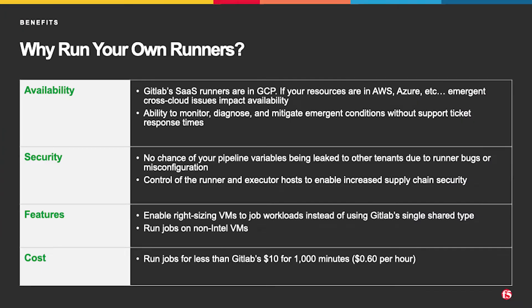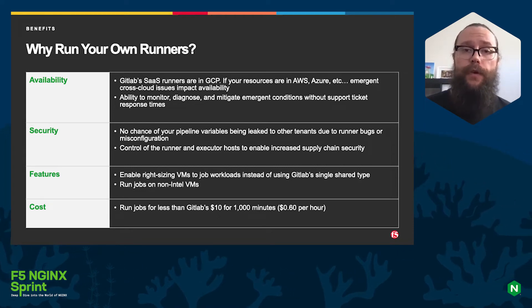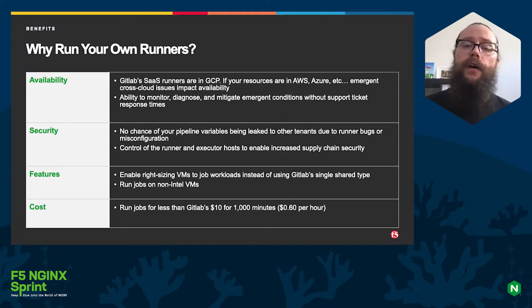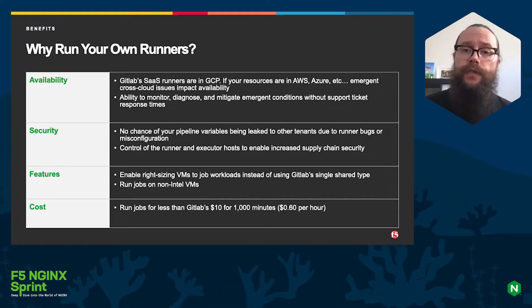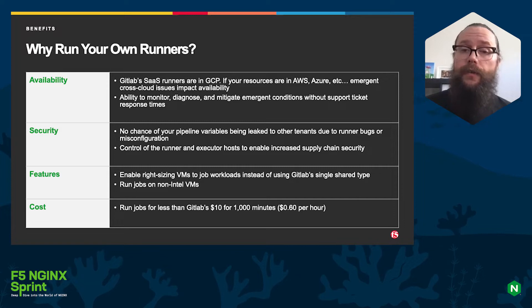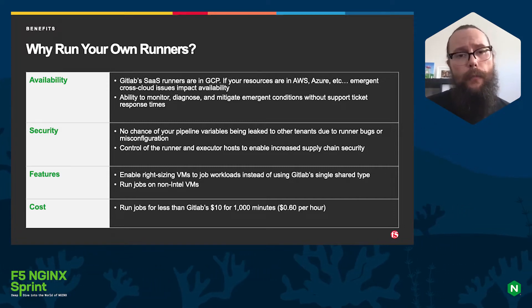Why would you run your own runners? If you're using the open source on-prem version, you're going to have to. But even if you're using the SaaS version, which comes with minutes on the free tier of 400, or on the ultimate tier 50,000, there are still reasons why you'd want to, including cost. First, let's go through availability.